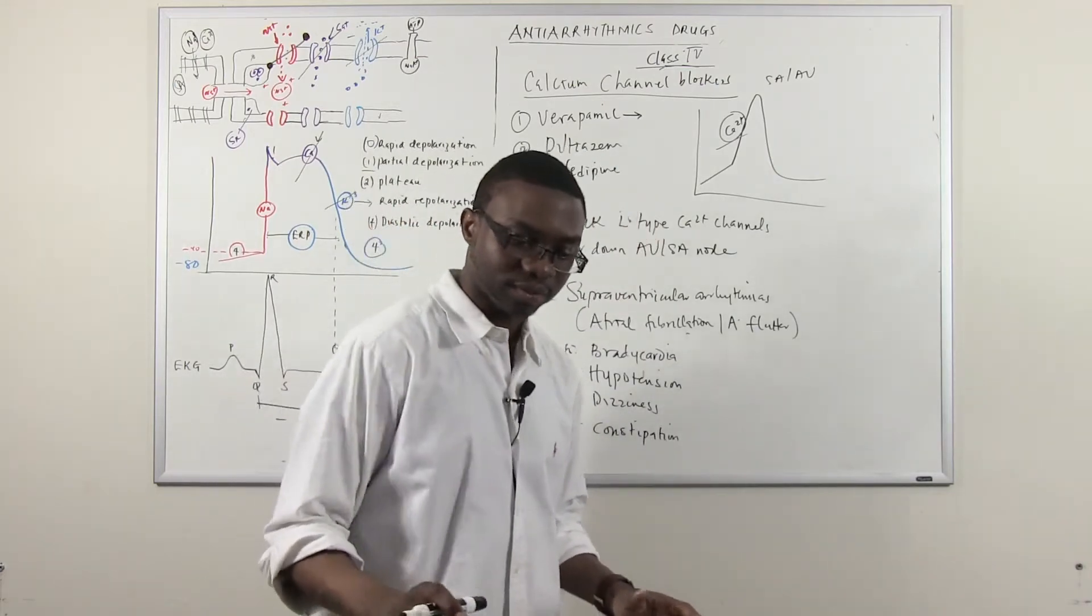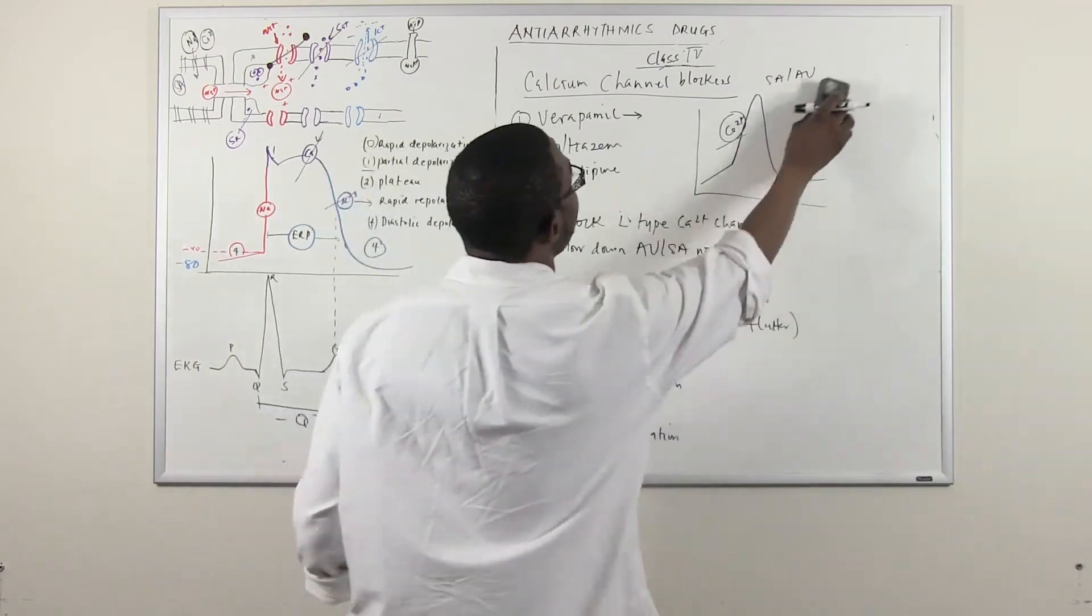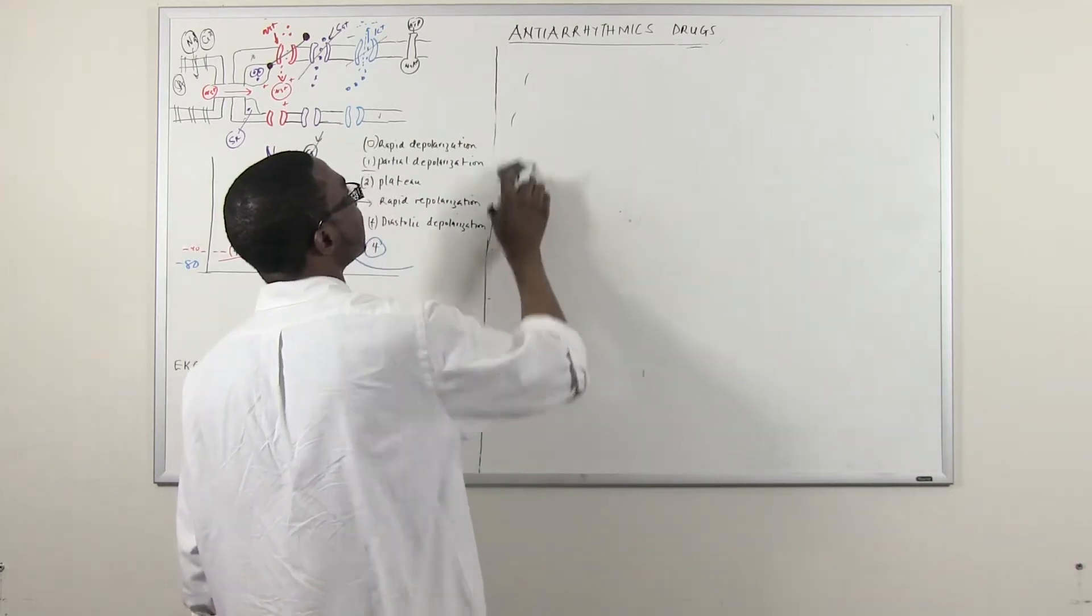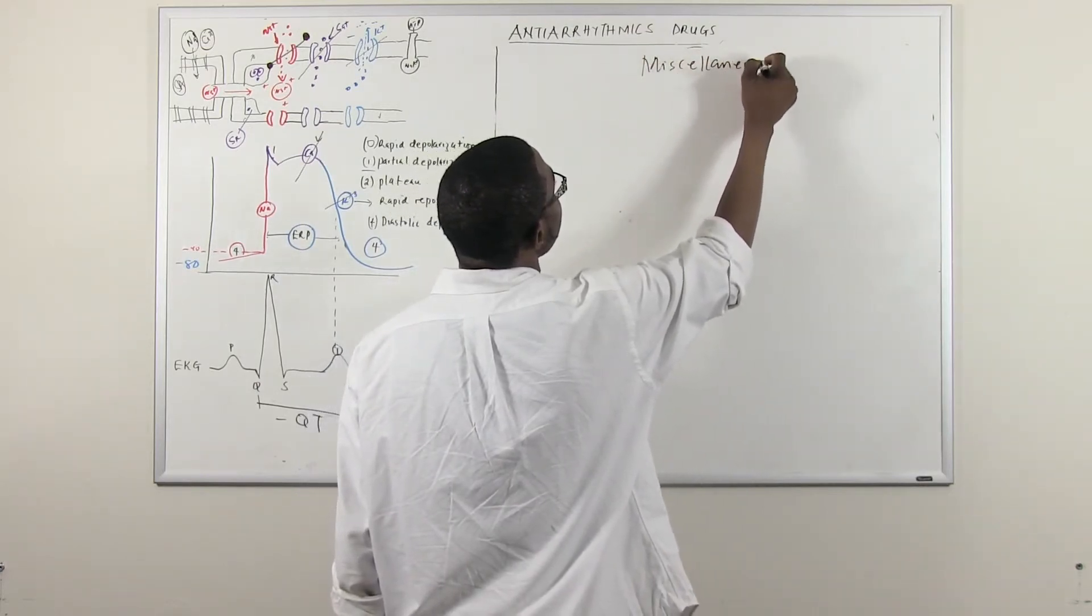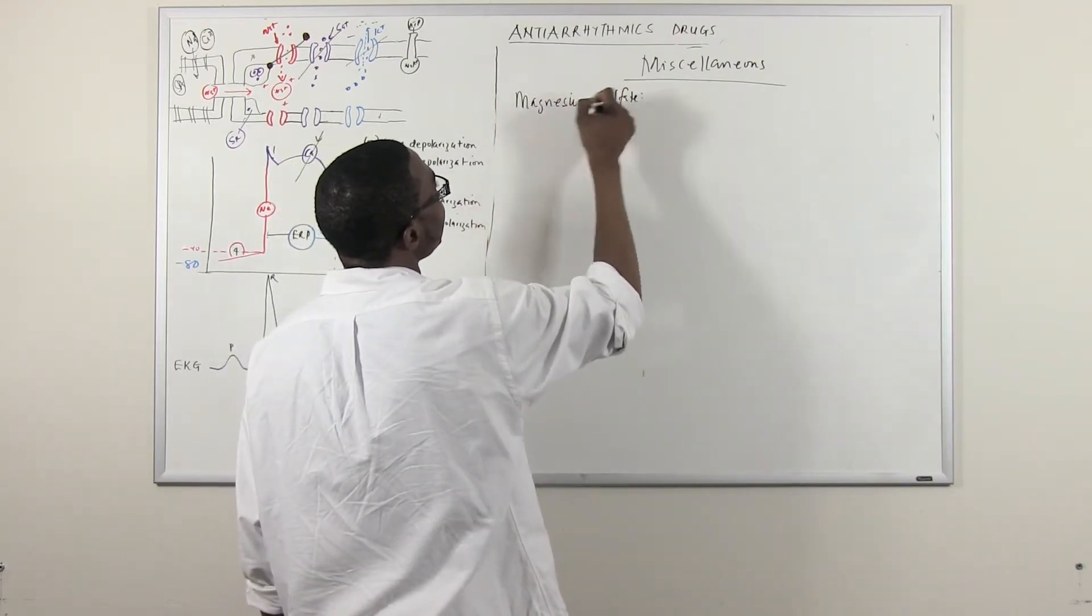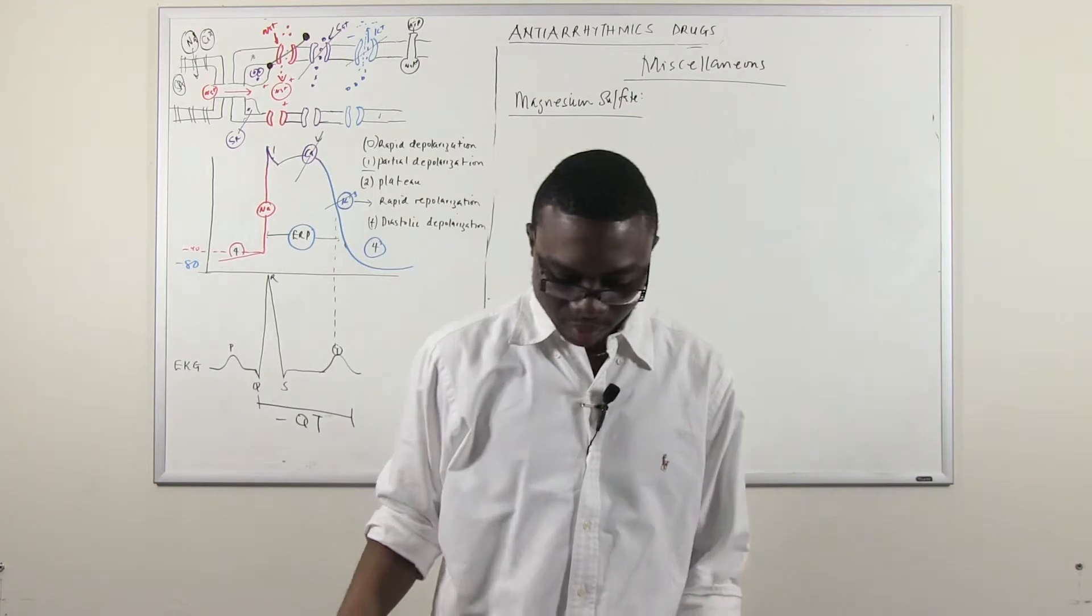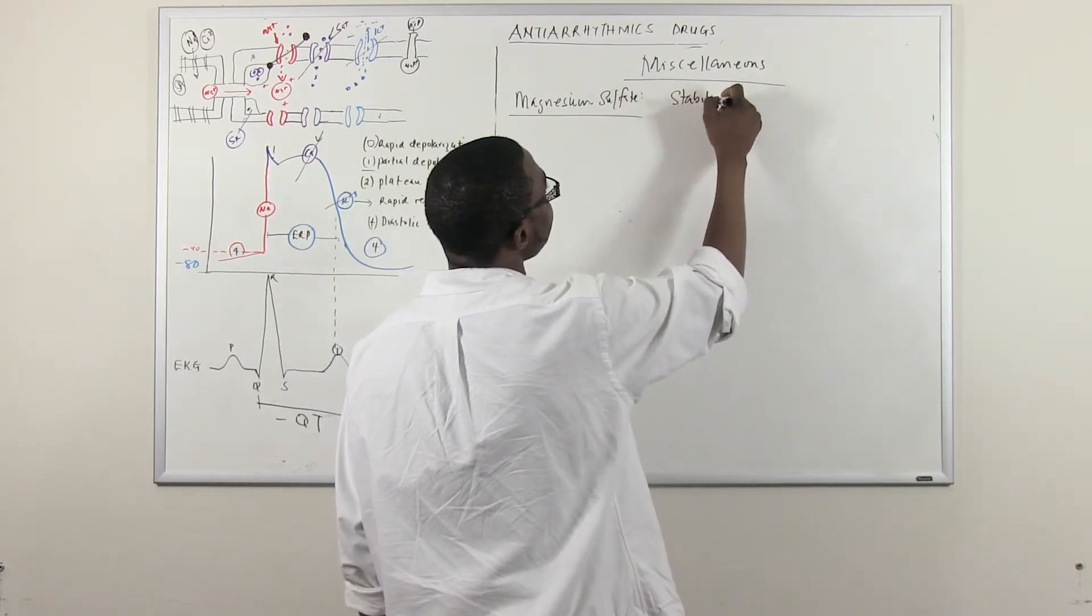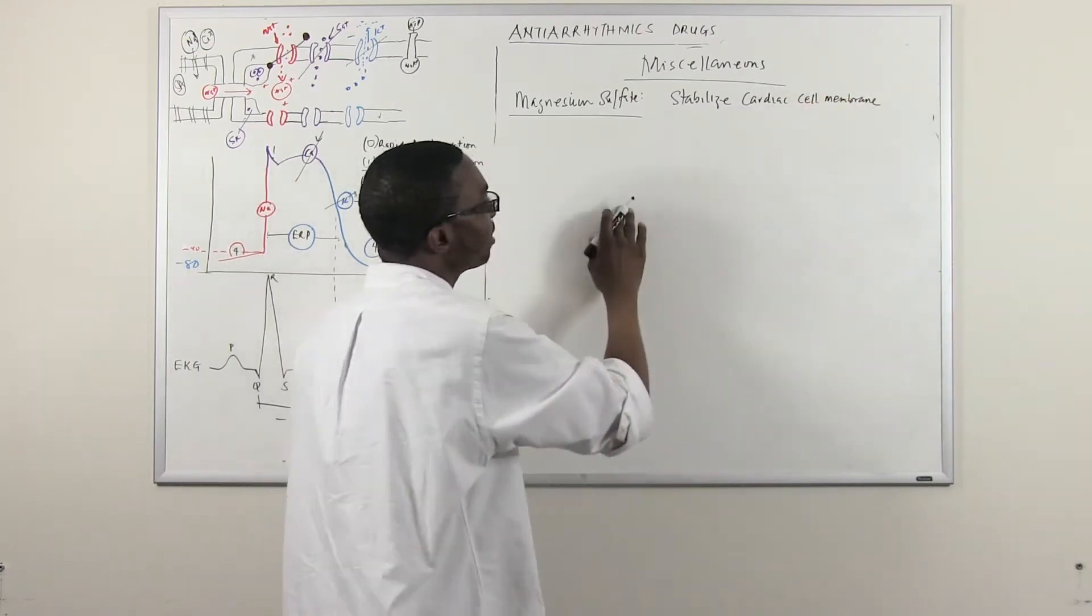Now, there's two other drugs that I just want to quickly mention because we've talked about class one, class two, class three, and class four. These other two drugs doesn't really have a class. This is magnesium and adenosine. We call them miscellaneous. So magnesium, which is an ion, magnesium sulfate. We don't really know the mechanism of action, but it starts to stabilize the cardiac cell membrane.